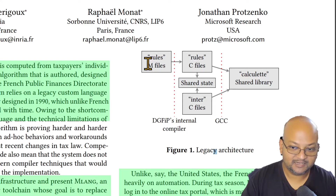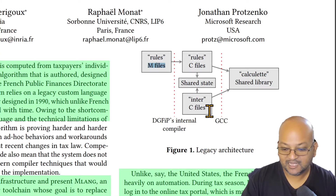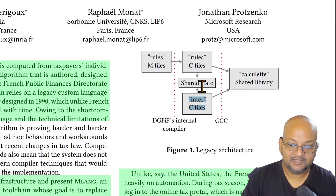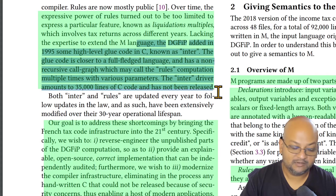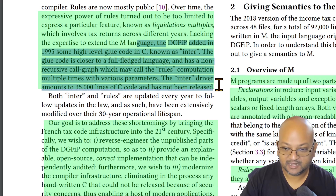The problem is that M is not Turing complete — it doesn't have loops, for example. Some recent additions to the tax law needed to specify logic that was not expressible in M, so the department wrote that logic directly in C and linked it against the C produced by the M compiler. While most of the M code is available for French citizens to examine and understand their tax rules, the C code is not public because of the fear that it's not secure enough and might get exploited.